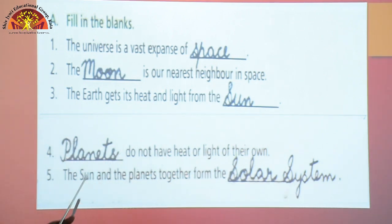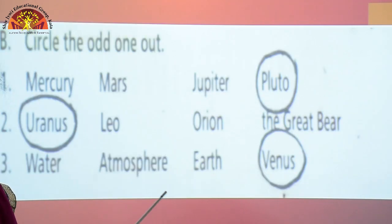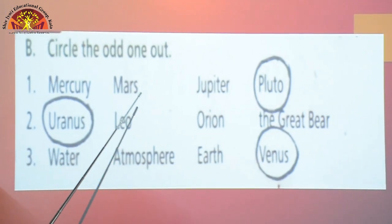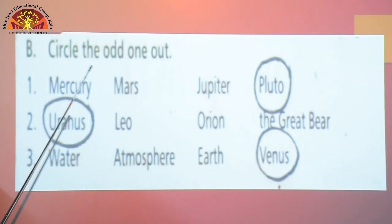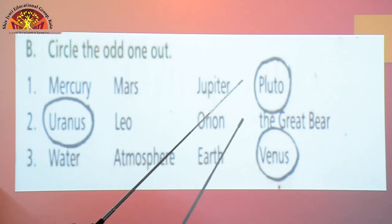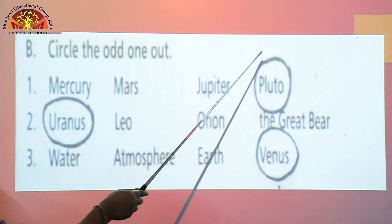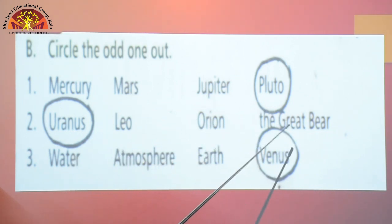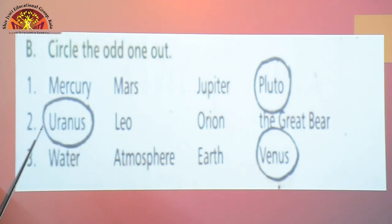Now come to page number 5 and we shall do Section B — circle the odd one out. Question 1: Mercury, Mars, Jupiter and Pluto. Mercury, Mars and Jupiter are full-size planets but Pluto is a dwarf planet, so Pluto is the odd one out. Question 2: Uranus, Leo, Orion and the Great Bear. Leo, Orion and the Great Bear are constellations, and Uranus is a planet, so Uranus is the odd one out. Question 3: Water, atmosphere, Earth and Venus. Water and atmosphere are part of the Earth, so Venus is the odd one out — circle Venus with your pencil.